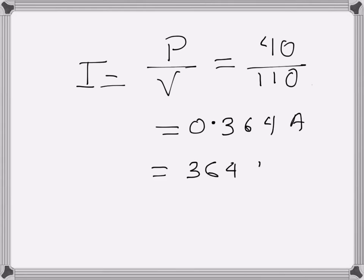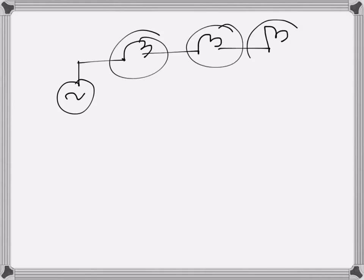Now if the same 10 bulbs are connected in series with the supply voltage, what happens to the current through each of the bulbs? So now we will have just one current. I'm going to draw the 10 bulbs connected in series with a 110-volt power supply, each of them 40 watts.